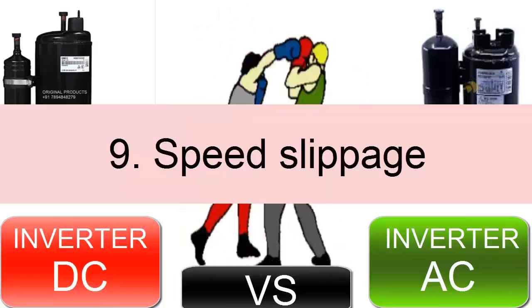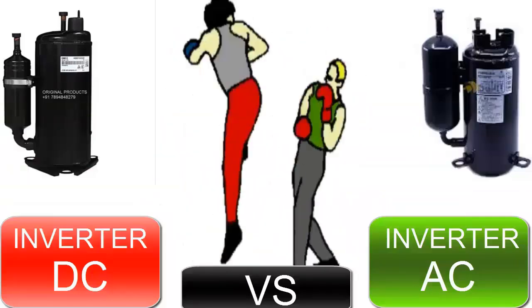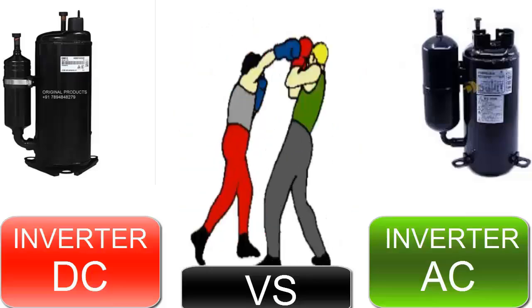9. DC compressors have virtually no speed slip due to precise control, whereas AC compressors may have slight speed slip.